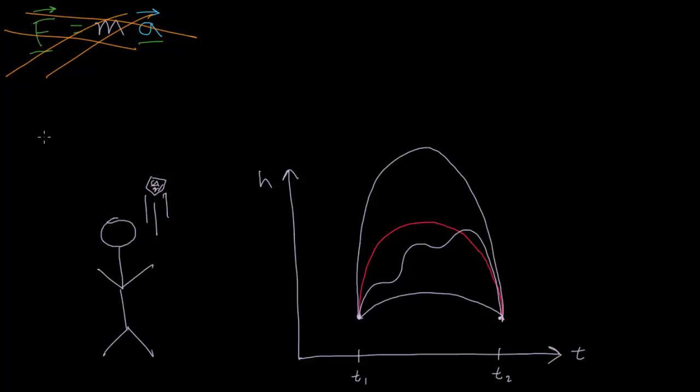The thing that we're going to talk about in this video is called the principle of least action. So least action. What is action? Well at each point along this path, along every path, but at each point, the rock has a certain kinetic energy and it has a certain potential energy.